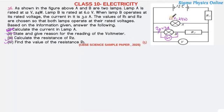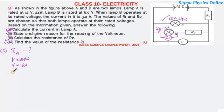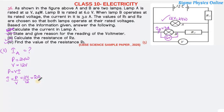The first question asks us to calculate the current in lamp A. The power rating is given as 24 watt and the potential difference is 12 volt. Using the formula power equals voltage times current, we get current = P/V = 24/12 = 2 ampere. So the current in lamp A is 2 ampere.